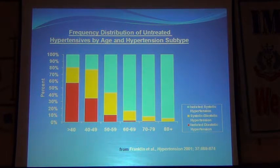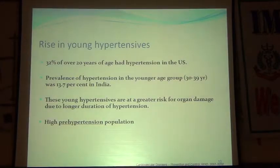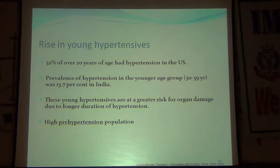As age advances, isolated systolic hypertension becomes more common in the elderly, while diastolic blood pressure tends to come down with age. In the younger age group, between 30 and 39, hypertension prevalence was 30.7 percent in India. These young hypertensives are at greater risk for organ damage due to their longer duration of hypertension.